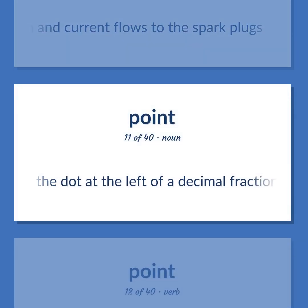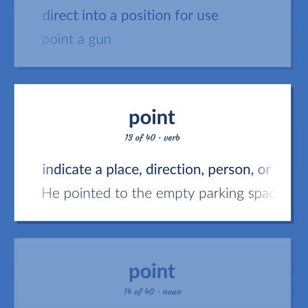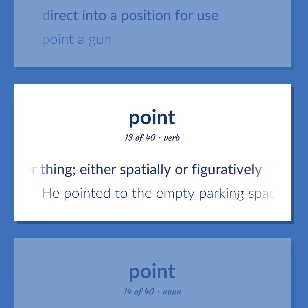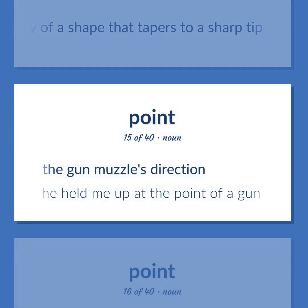The dot at the left of a decimal fraction. Direct into a position for use. Point a gun. Indicate a place, direction, person, or thing, either spatially or figuratively. He pointed to the empty parking space. The property of a shape that tapers to a sharp tip. The gun muzzle's direction. He held me up at the point of a gun.